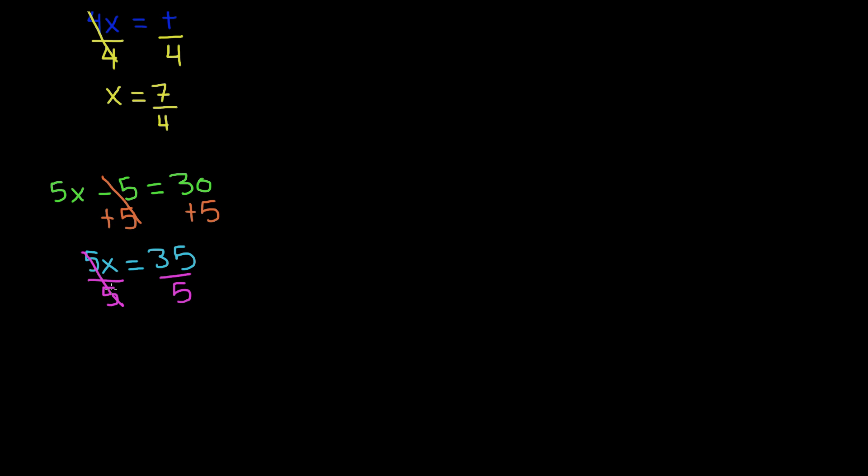So 5 and 5 cancel each other out, and we are left with x is equal to 35 divided by 5, and this does go evenly by 7. So 5 times 7 is 35. And our answer is x is equal to 7.